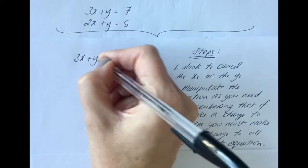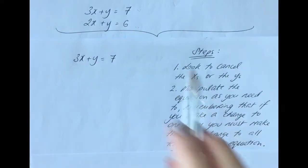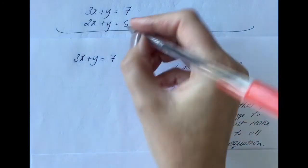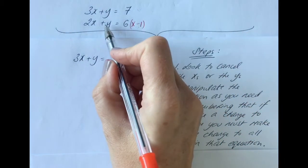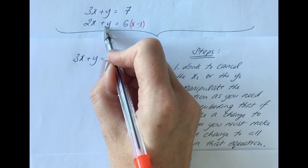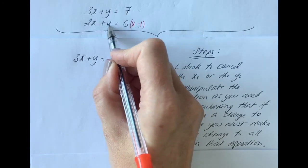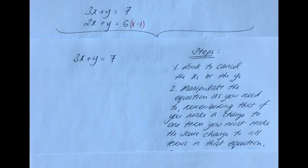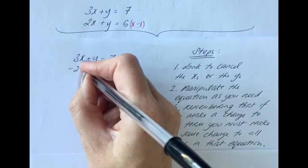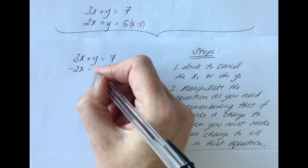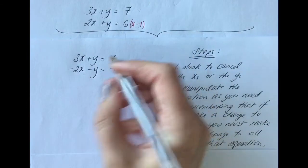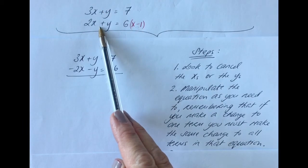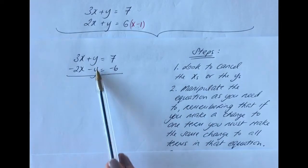To get a minus y, I'm going to multiply the whole bottom equation by minus one. Minus one times y is minus y, but to keep the equation balanced I have to do the same to all terms. So minus one times 2x is minus 2x, minus one times y is minus y, and minus one times 6 is minus 6. That's steps one and two done — I've manipulated the second equation so the y's are now set up to cancel.